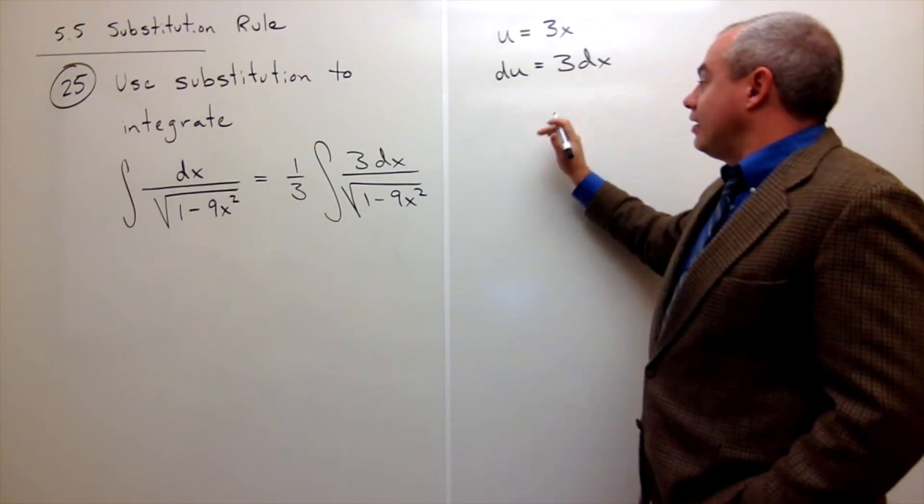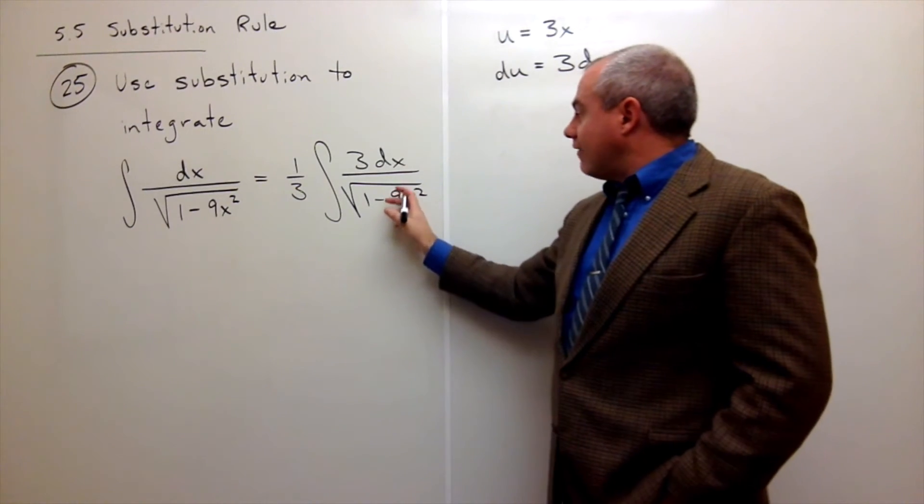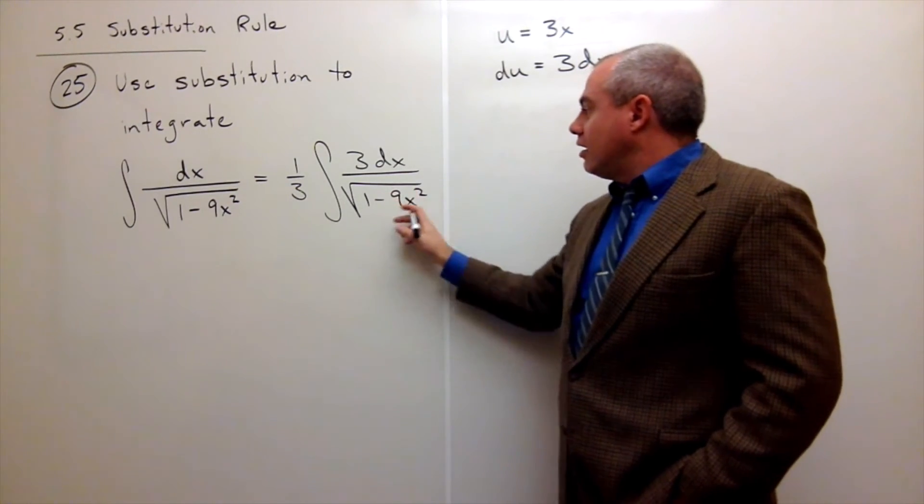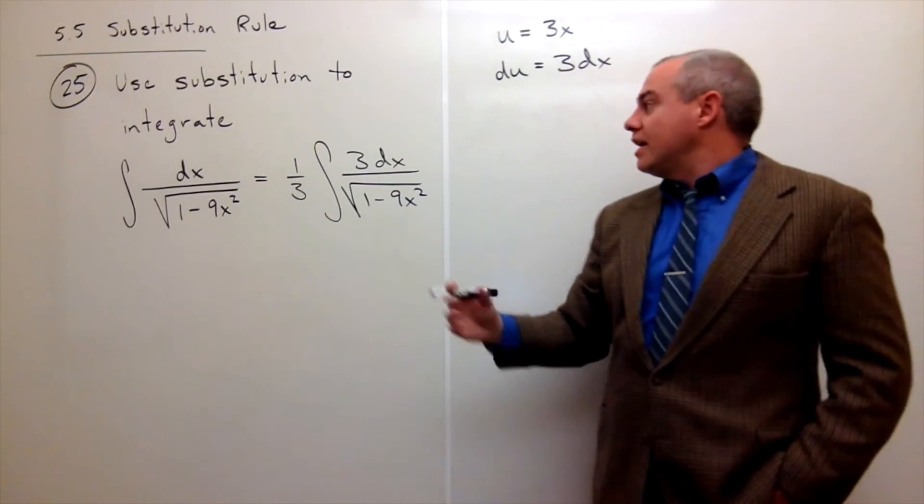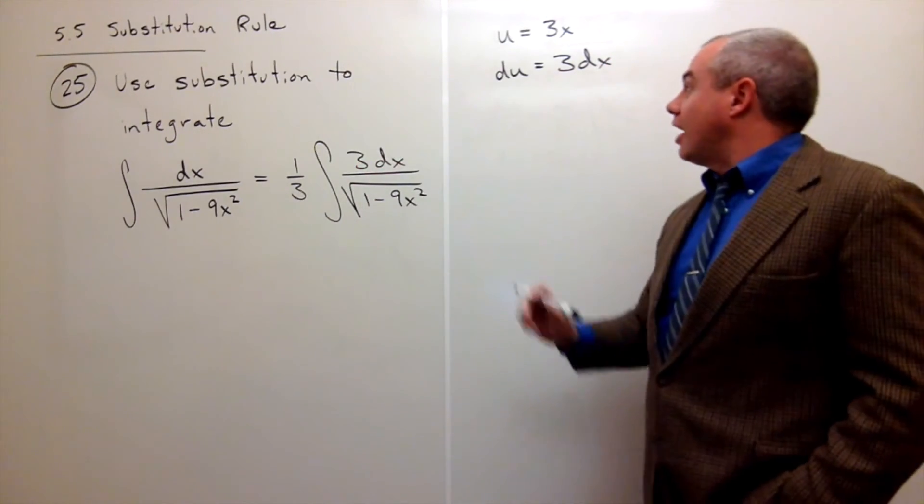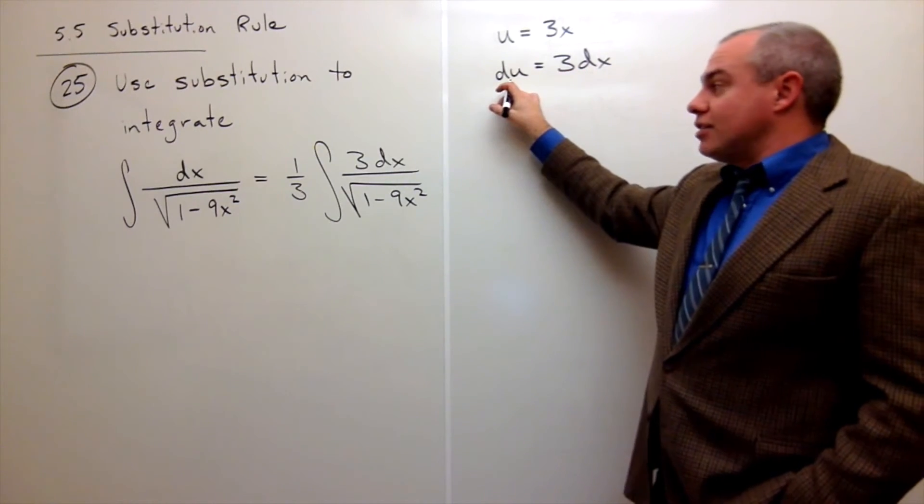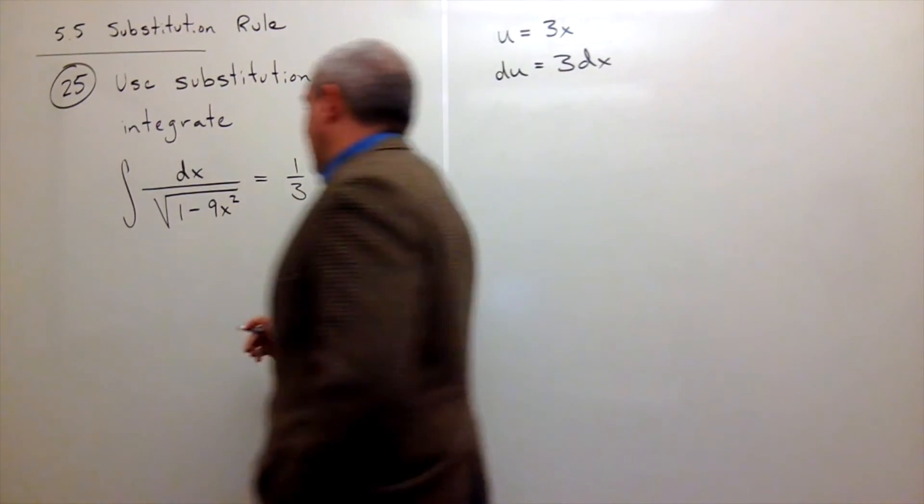And now I have 9x squared right here, but 9x squared is really just u squared. And I have a 3 dx on top, which is the same as du. So let's rewrite this guy again.